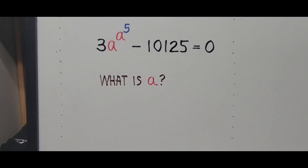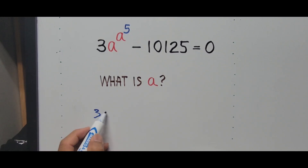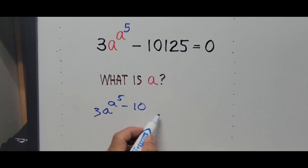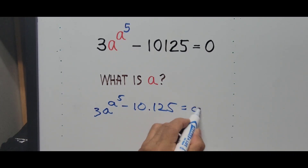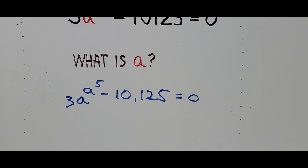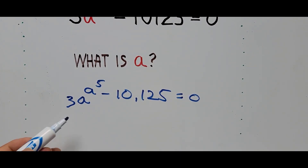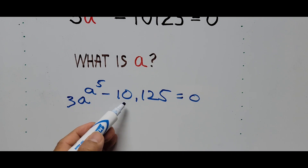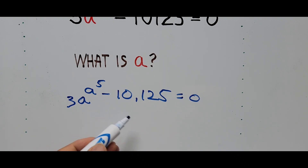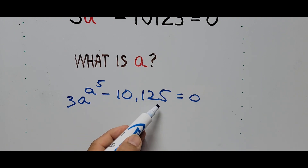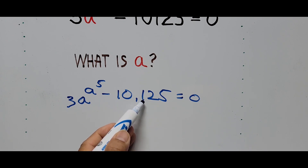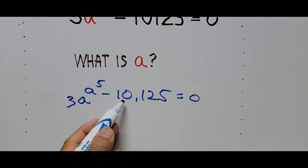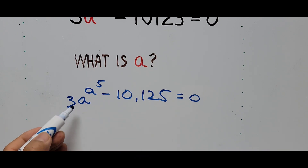Let's start solving the exponential equation. We write it again: 3 times a raised to a raised to the fifth power minus 10,125 equals zero. Notice there is a coefficient of 3 on the first term. Let's investigate if we can divide the whole equation by 3. For the number 10,125, we check the sum of the digits: 5 plus 2 plus 1 plus 0 plus 1 equals 9, so it is divisible by 3.